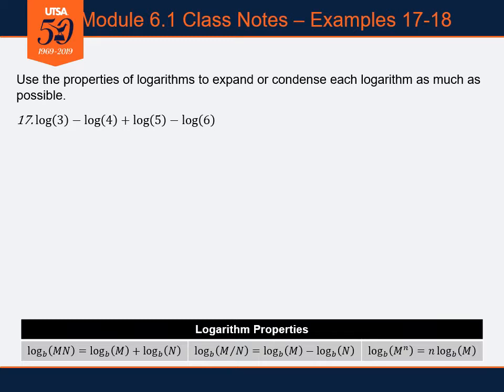Our goal is to condense those several logarithms into a single logarithm. We'll do that by order of operations, working left to right, keeping it as simple as possible. The first operation is log of 3 minus log of 4. I can take a subtraction of two logarithms and combine that into a single logarithm of a fraction — log of 3 minus log of 4 becomes log of 3 divided by 4. I want to work one rule at a time.